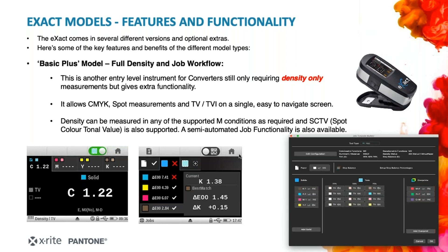Basic plus gives you some extra functionality. It is still a density-only model, but it also allows you access to the job wizard workflow. Not only can you use the standard device in basic mode as a CMYK style of operation, but you can use the device through exact manager to build up your own CMYK workflows if you're working to something other than the international print standard. The job workflow allows a semi-automated workflow for measurements of substrate, solid patch, tint, over print, etc., and can be configured easily through the exact manager suite.